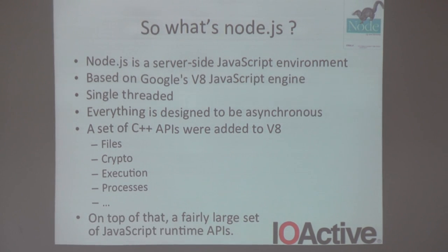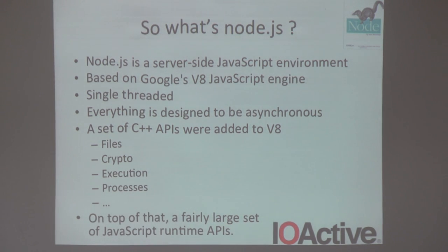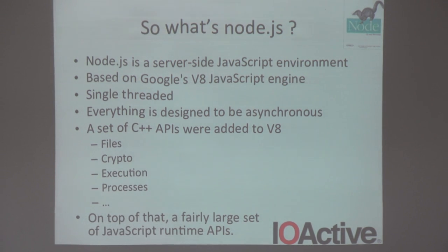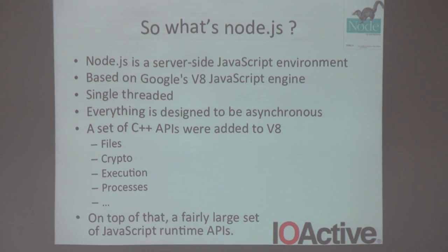So what exactly is Node.js? It's basically a server-side environment for web cases, web services, and other things, all running on JavaScript. It's based on Google's V8 engine — the same JavaScript engine that runs Chrome. They built their own APIs and framework on top of it. Everything is single-threaded. They add APIs including files, crypto, execution processes, and networking. I listed those four because those are what I'll dive into.